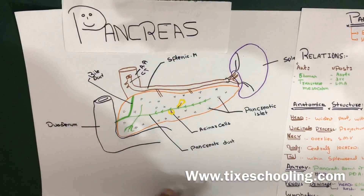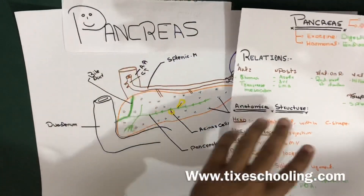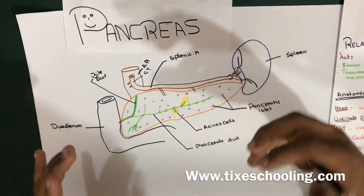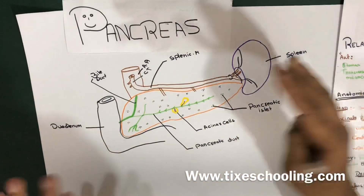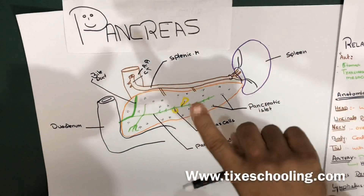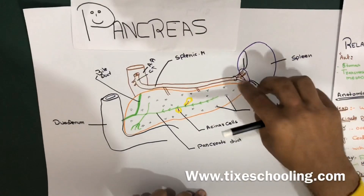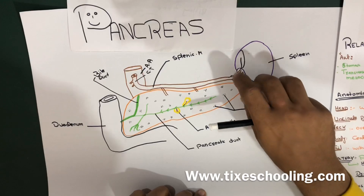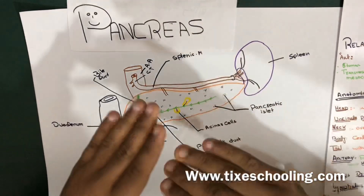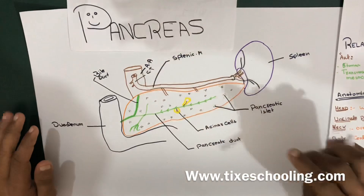I'll be using this diagram to explain the pancreas. The pancreas is an oblong-shaped organ positioned at the level of the transpyloric plane. It is a retroperitoneal organ, except the tail which is intraperitoneal, and is located deep within the upper abdomen in the epigastrium and the left hypochondriac region.